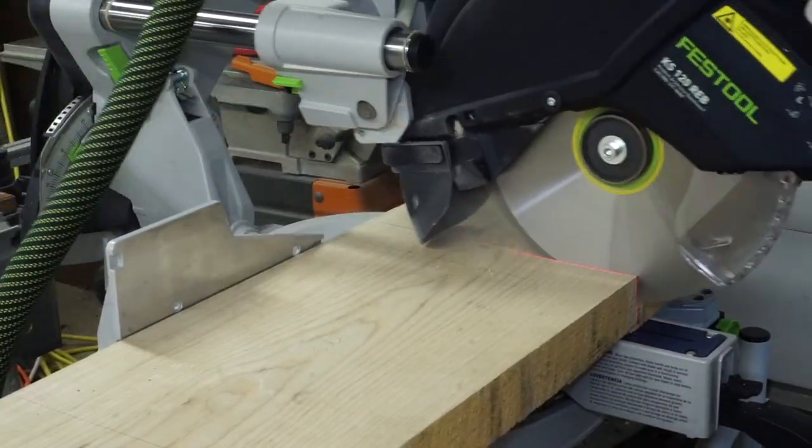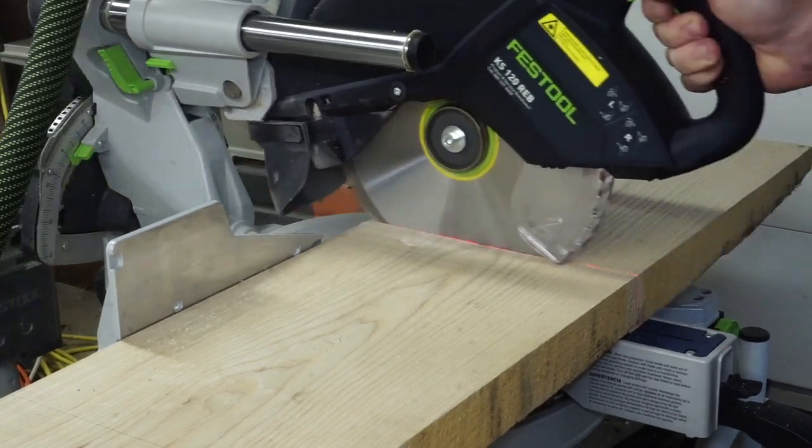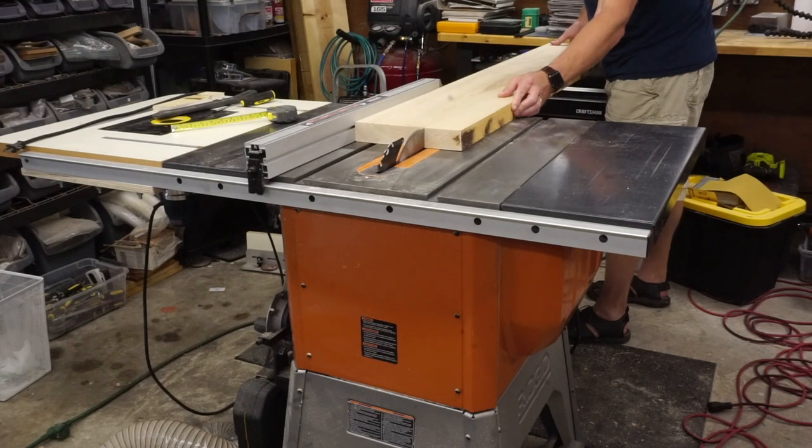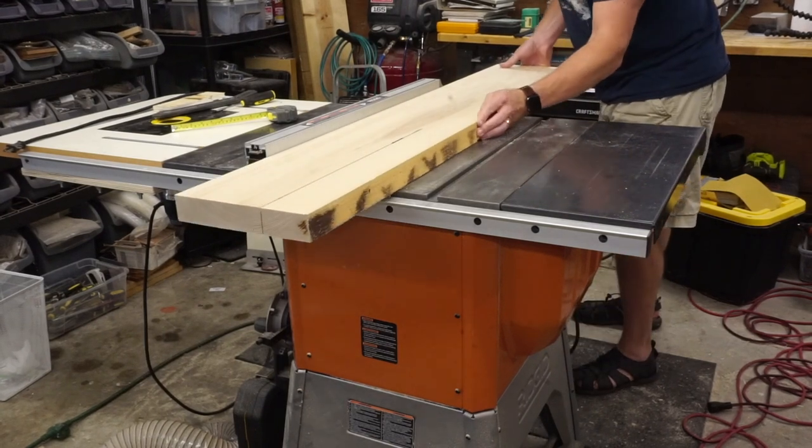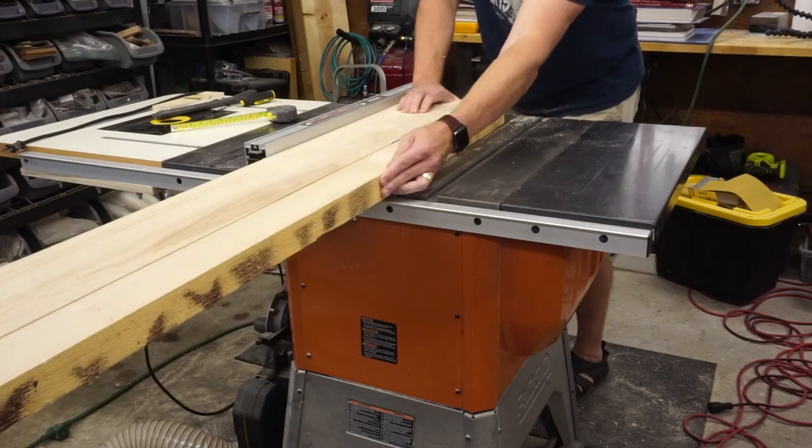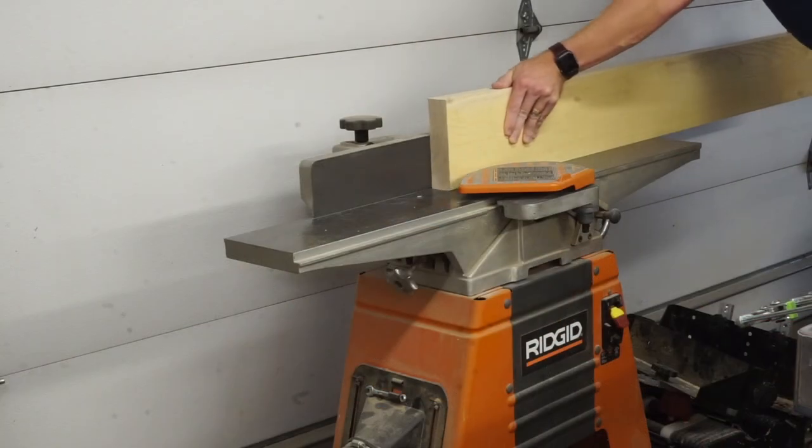My plan was to make the shelf out of solid ash as I had some 8-quarter boards still left in the shop. I rough-sized everything then went to re-saw them on the bandsaw. I knew these boards were not ideal for re-sawing due to the grain pattern, but in previous projects they seemed super stable.